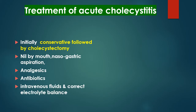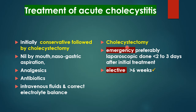Treatment of acute cholecystitis is initially conservative followed by cholecystectomy. Conservative measures include keeping the patient nil orally, nasogastric aspiration if necessary, broad-spectrum antibiotics, and intravenous fluids to correct electrolyte and fluid imbalance. Definitive treatment is cholecystectomy — either emergency or elective. Emergency cholecystectomy is preferably done laparoscopically within the first 2–3 days if the patient fails to improve on conservative treatment. Elective surgery is done after six weeks — the patient is stabilized, discharged, and brought back for elective laparoscopic cholecystectomy.